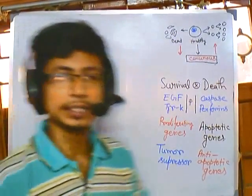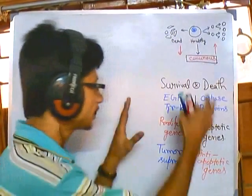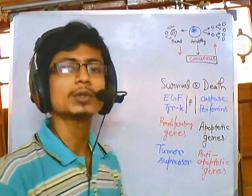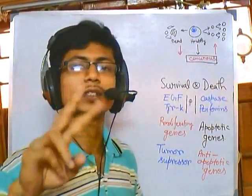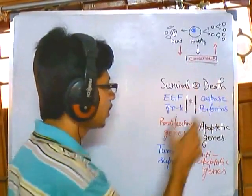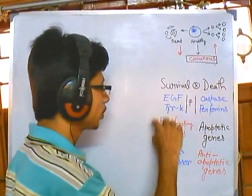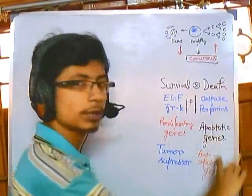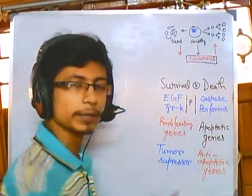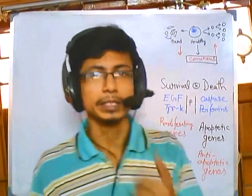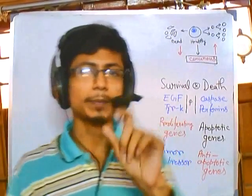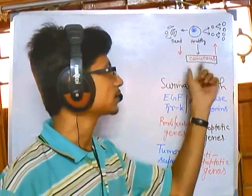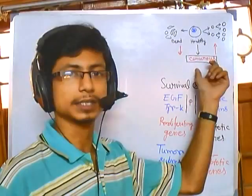Inside our body, both types of genes are present — for survival and for death. For survival: one positive modulator, one negative modulator. For death: one positive modulator, one negative modulator. Now, what happens when a cell transforms into a cancer cell?